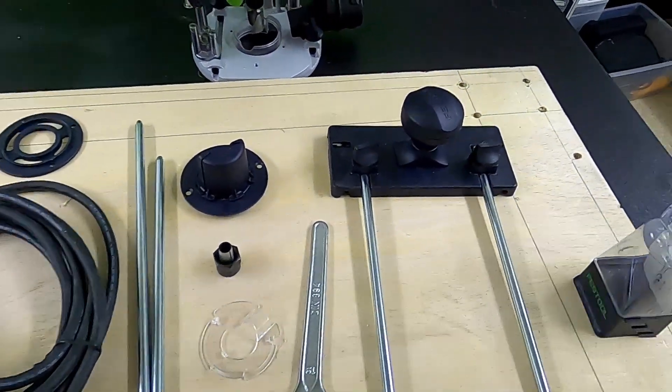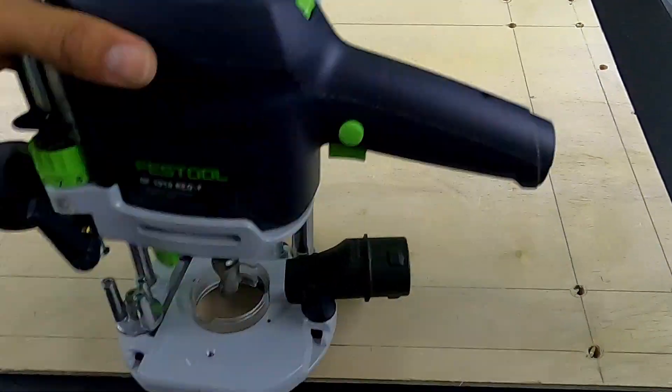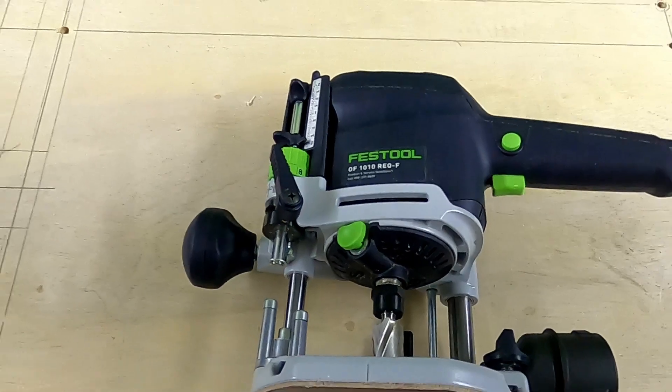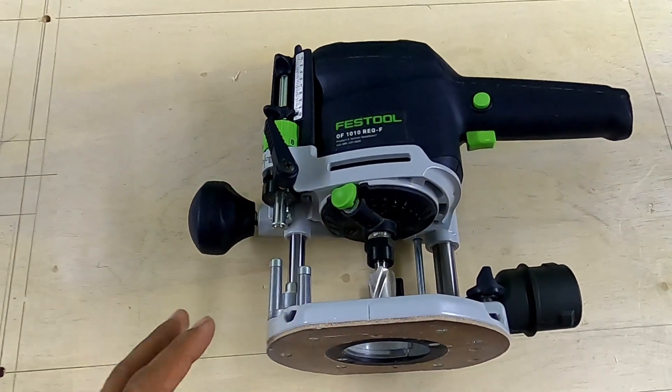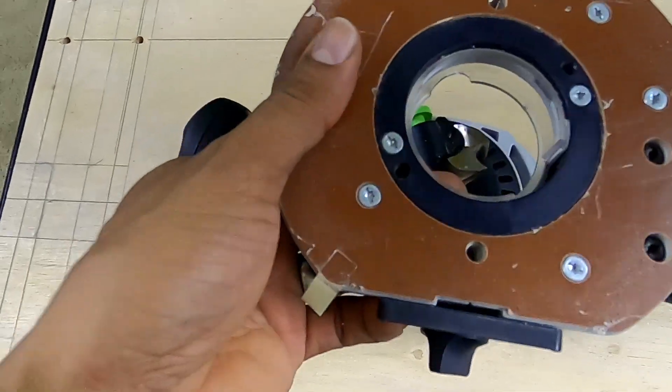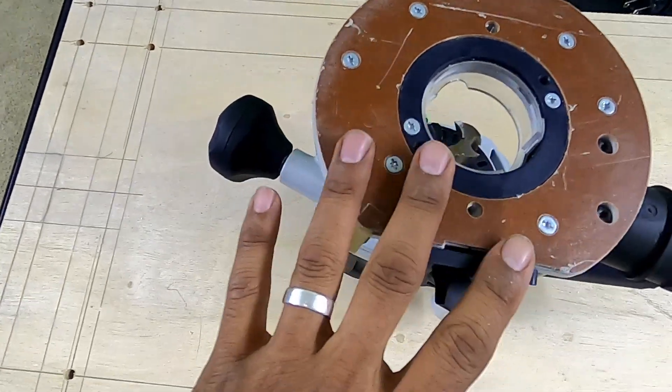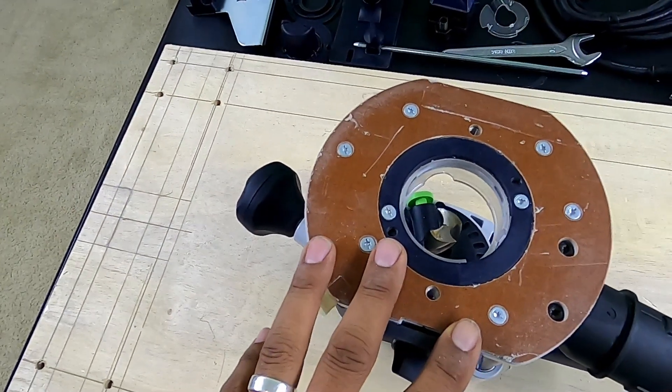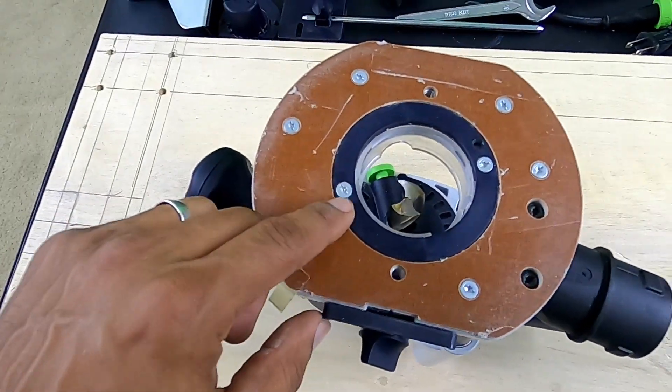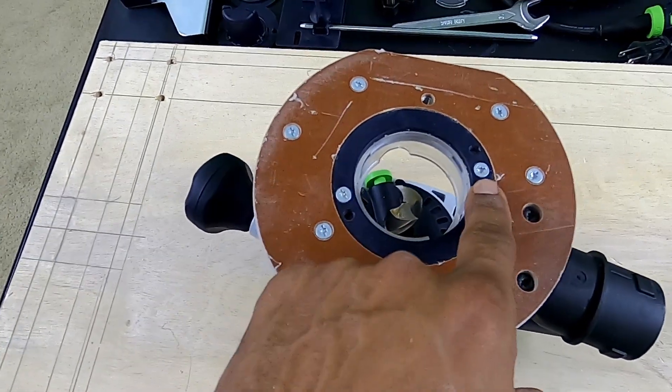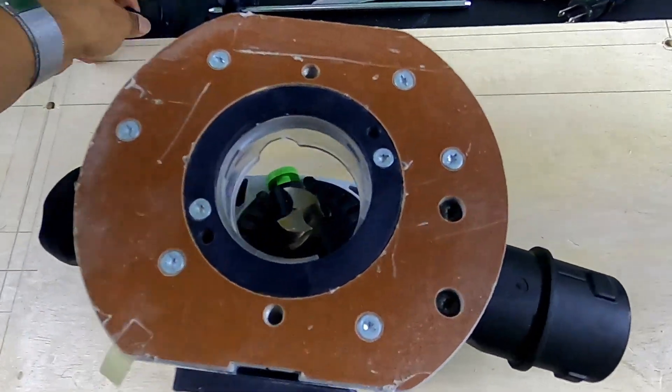I'm just taking a closer look at the router itself now. Looking at the base, first and foremost, it does not have the quick release bases. You actually have to use a posi drive screwdriver to remove the base.